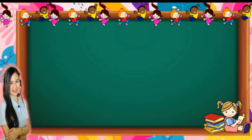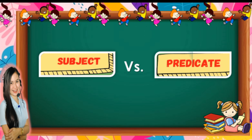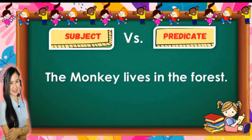Now let's practice identifying the subject and predicate in some complete sentences. Are you ready, grade 4? Let's read the first example. The monkey lives in the forest. Let's read again: The monkey lives in the forest.